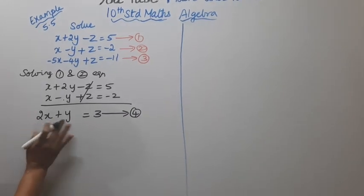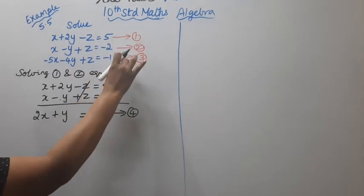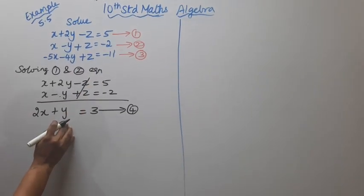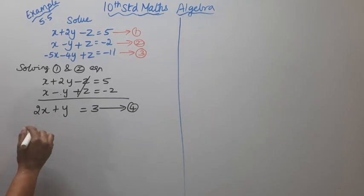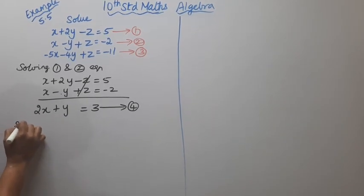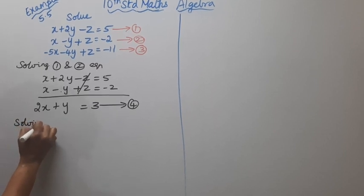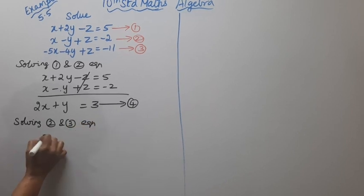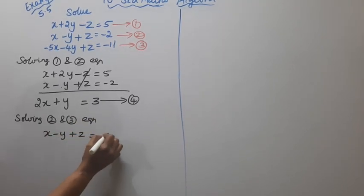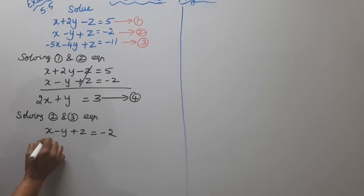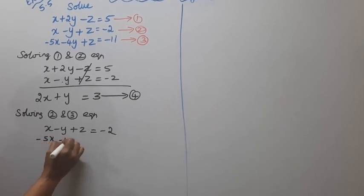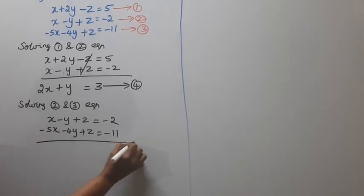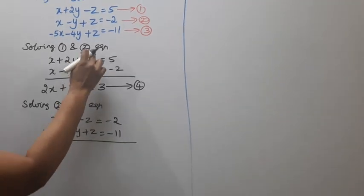Now we can solve equations 2 and 3. Solving the second and third equations: x minus y plus z equal to minus 2, and minus 5x minus 4y plus z equal to minus 11. The z terms cancel.